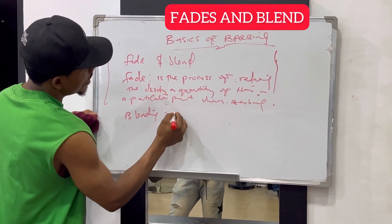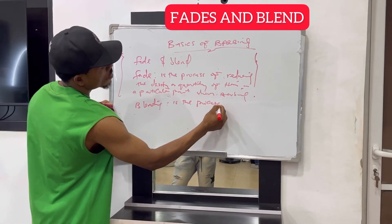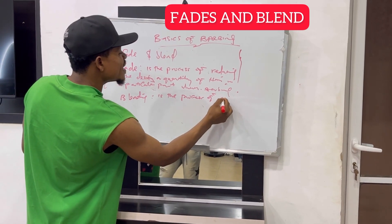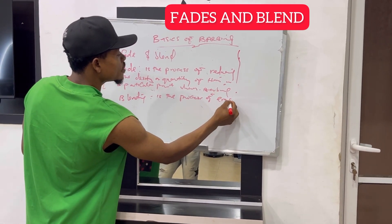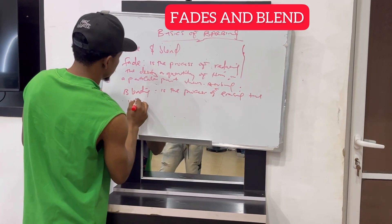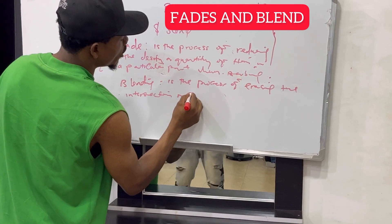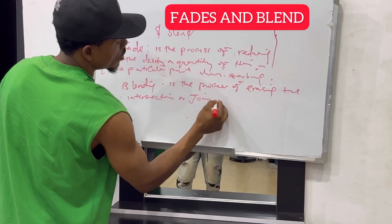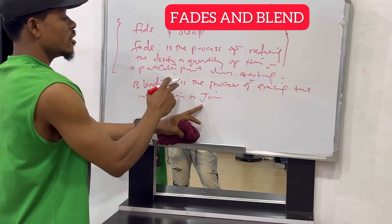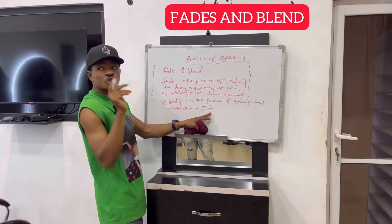Blending is the process of erasing the intersection or joining. Blending is the process of erasing the intersection or joining when bobbing.